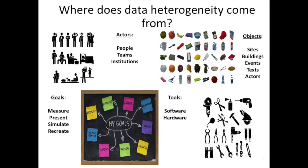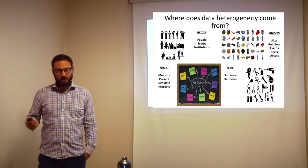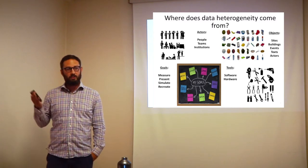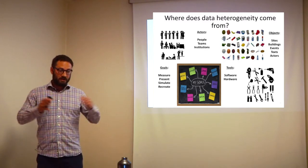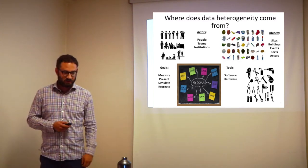Where does data heterogeneity come from? Data heterogeneity comes from a lot of sources. I've identified four main categories. We have different types of actors working with data — the scale of the people involved. Is it an individual researcher, an institution, or a consortium? The fact that actors have access to different resources and different amounts of time will impact your ability to build data structures and put standards into effect, and therefore how heterogeneous your data is.